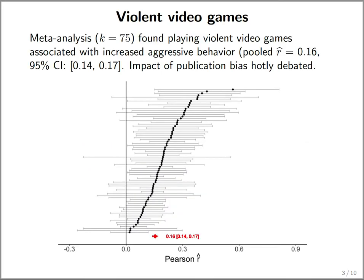Here's an example of a meta-analysis where publication bias was a serious concern. Anderson et al. looked at the association of playing violent video games with increased aggressive behavior across 75 studies. They found a pooled correlation of 0.16 with a confidence interval of 0.14 to 0.17, indicating some positive association.